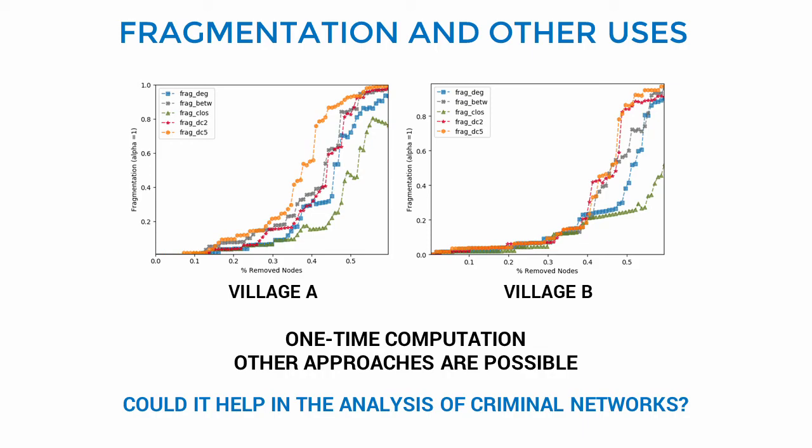We are also testing distinctiveness for network fragmentation purposes. So, we want to answer the question: could it help decide who should be vaccinated during a pandemic in order to limit the spread of a virus? Here,